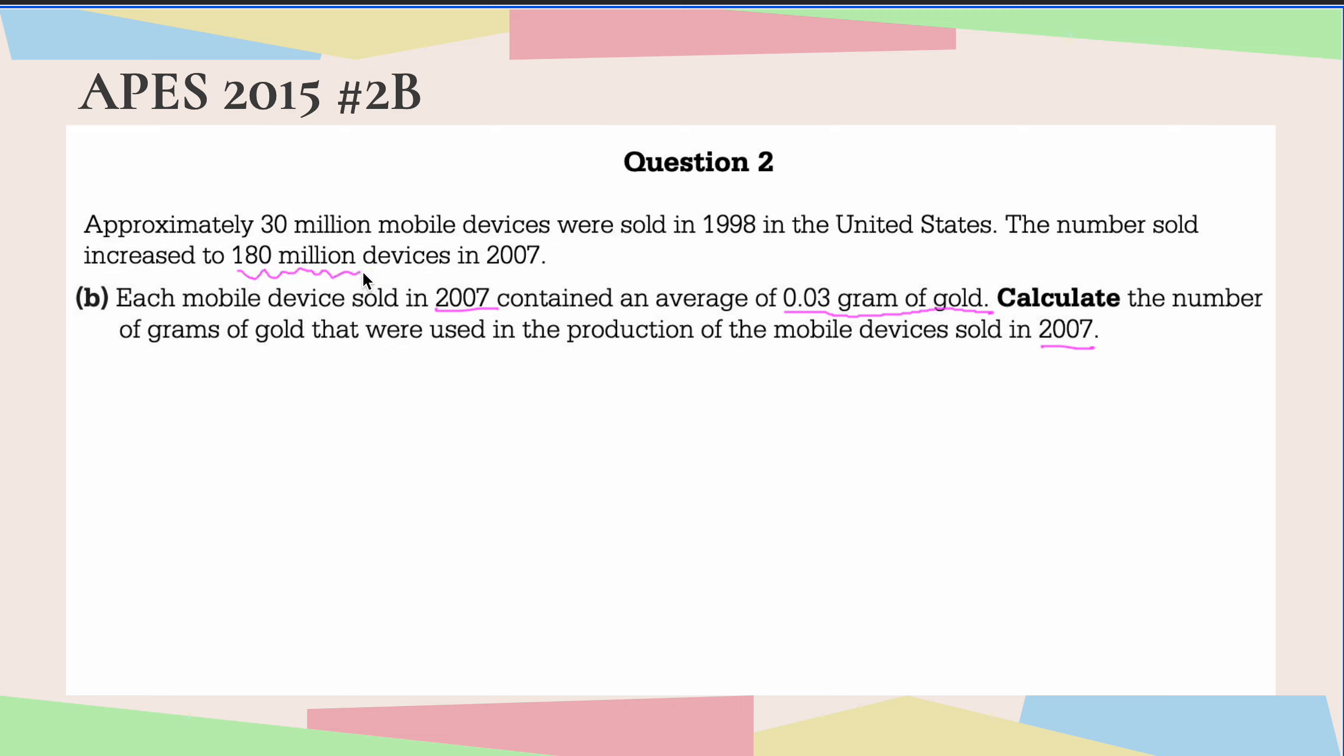We have that information here. We had 180 million mobile devices sold, and we know that there was 0.03 grams of gold for each of those mobile devices sold. So first thing I'm going to do is put these numbers into scientific notation.